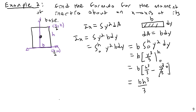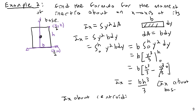Comparing the two results: Ix about the base equals BH³/3, while Ix about the centroid equals BH³/12. There is a dramatic difference in moment of inertia depending on where you take it. The key question you must always ask when computing a moment of inertia is: where am I taking this about? That is absolutely critical to applying things correctly.